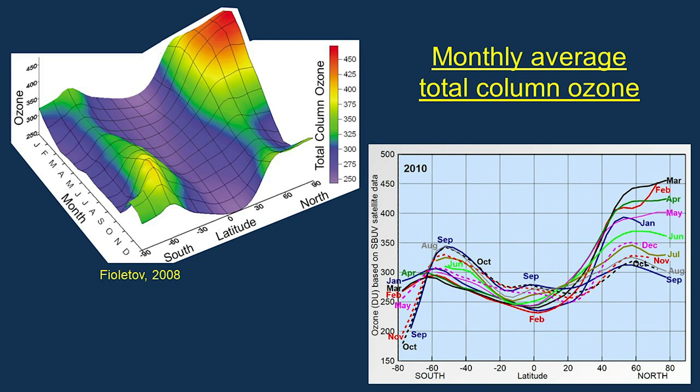The higher the concentration of ozone, the more ultraviolet B radiation is absorbed in the ozone layer, the higher the temperature of the ozone layer, and the lower the air temperature just above Earth's surface. When the ozone layer is depleted, more ultraviolet B radiation than normal is observed to reach Earth, cooling the ozone layer and warming Earth.